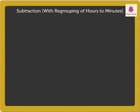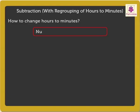Before we begin, let us review how to change hours to minutes. It is very simple. Just multiply the number of hours with 60.